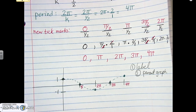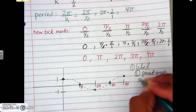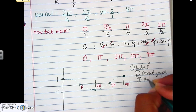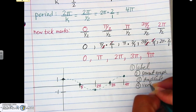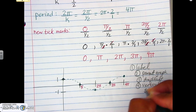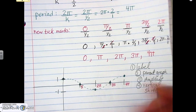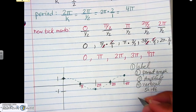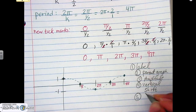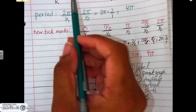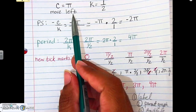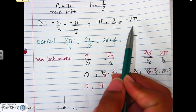There's no amplitude change for this problem, so step three is skipped. Step four is vertical shift, and there's none either since there's nothing at the back of the expression. The last step is the phase shift. We said we're moving left to negative two pi.